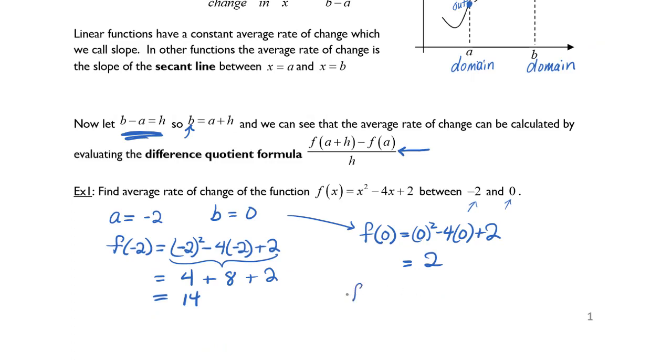So if we use our formula, we know that we need f of a plus h minus f of a all over h. Well we know f of a, f of b is 14.